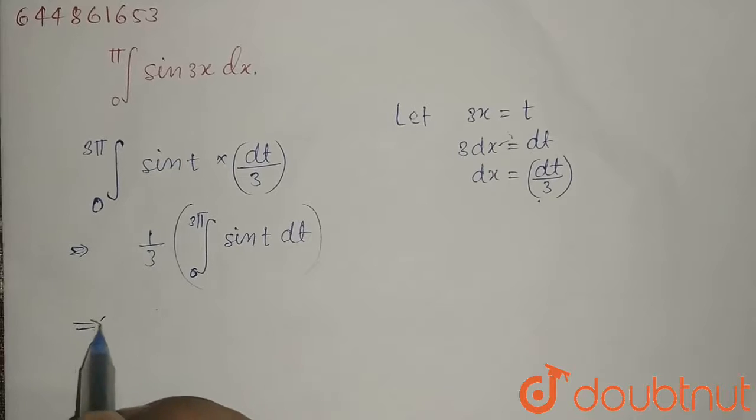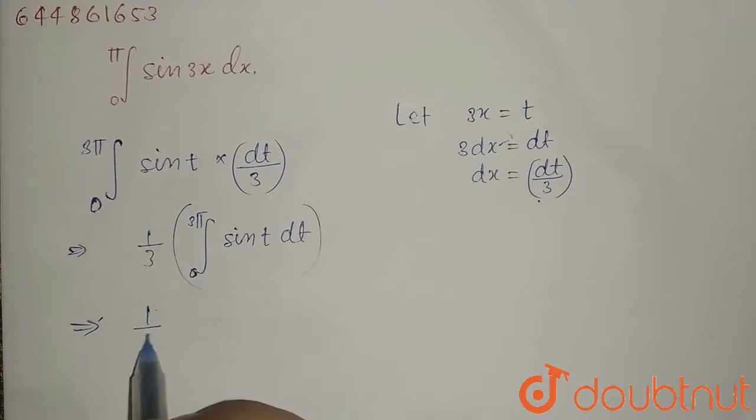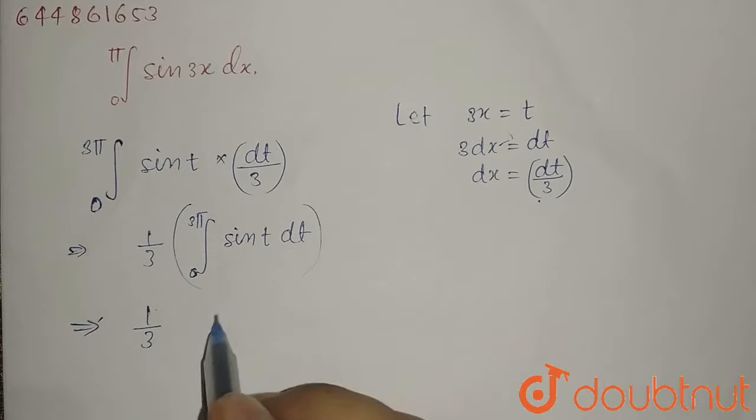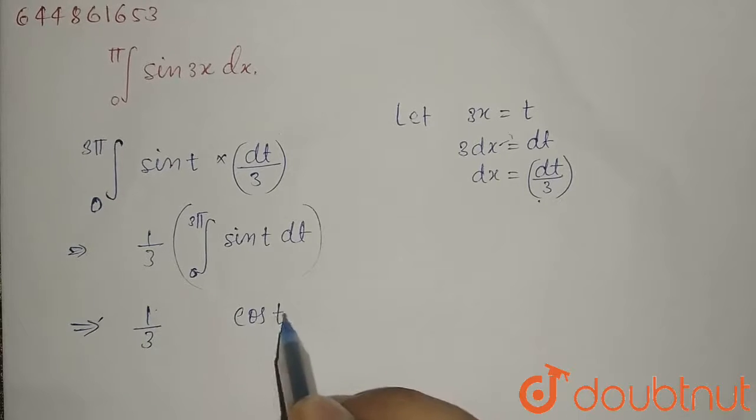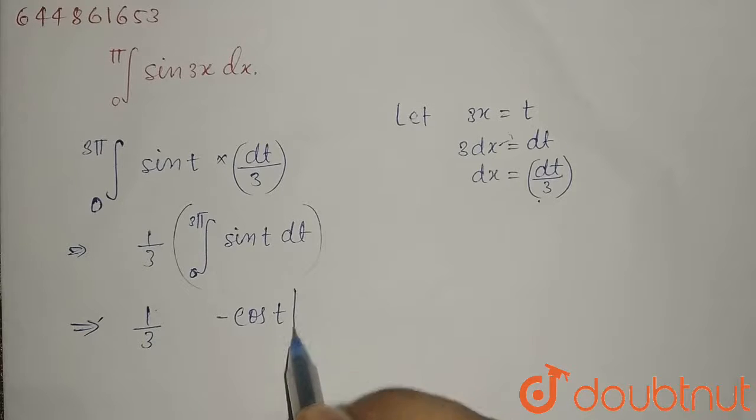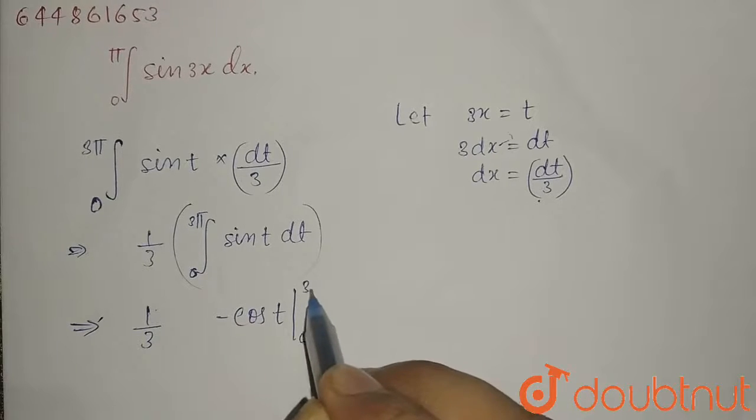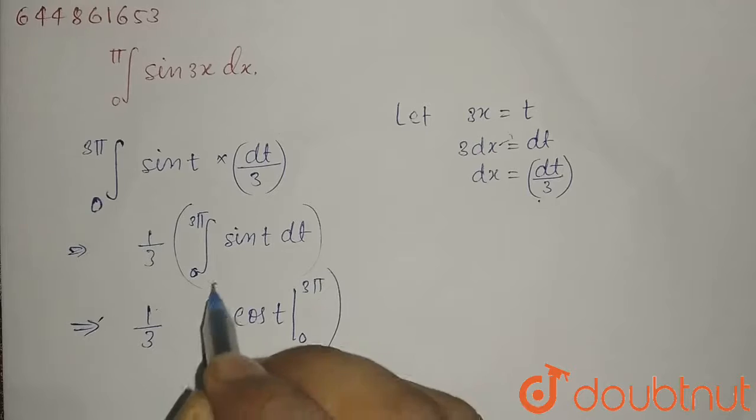As we know, the integral of sin is minus cos. So this equals 1 over 3 times minus cos t evaluated from 0 to 3pi.